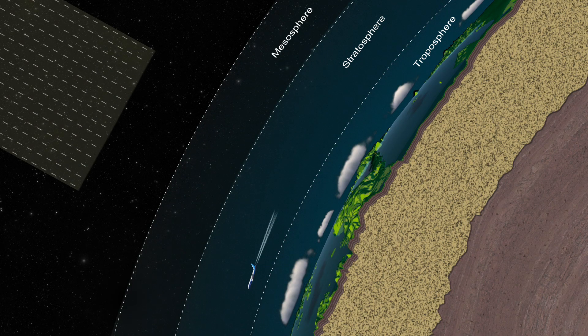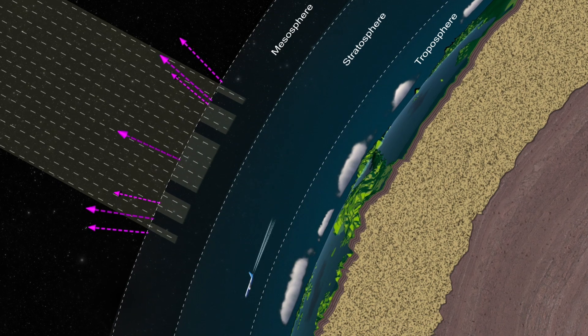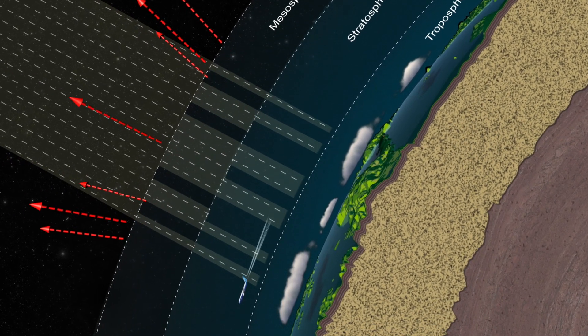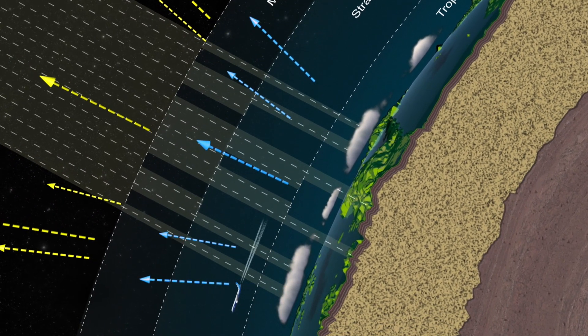Clouds affect how much of the sun's energy reaches Earth, which can be difficult to calculate without knowing how each cloud blocks, absorbs, or transmits light.